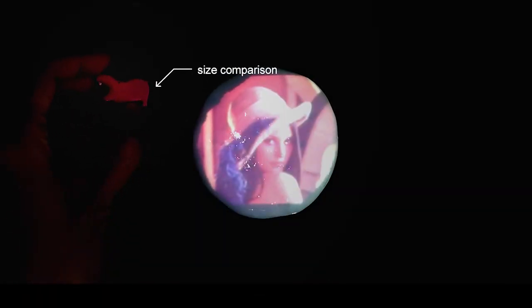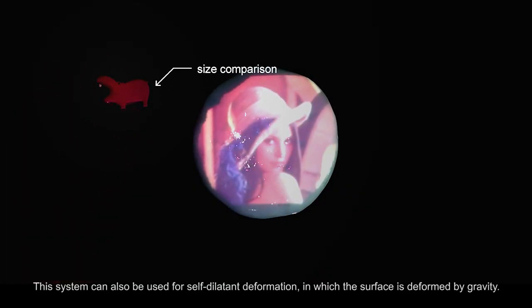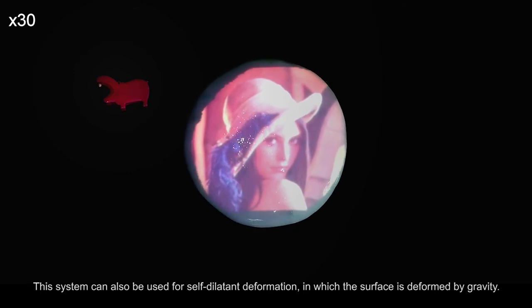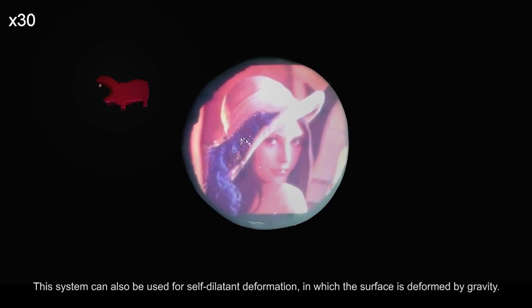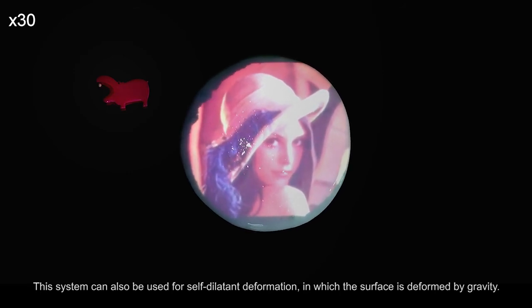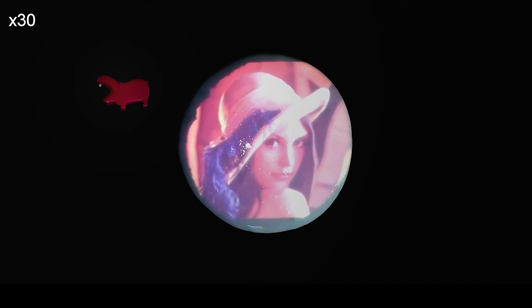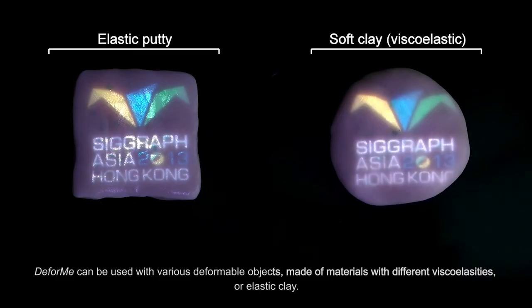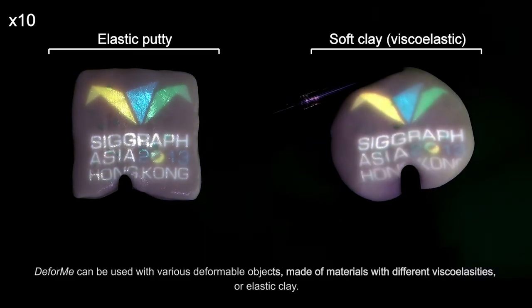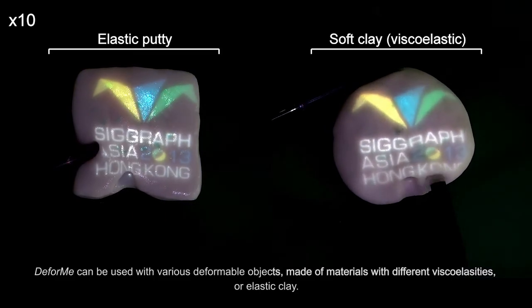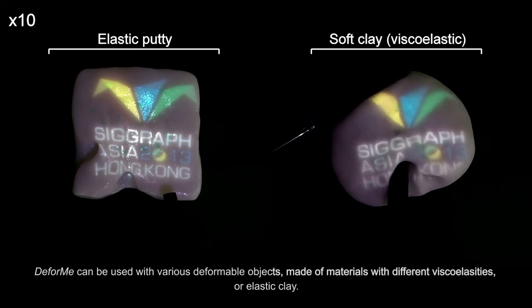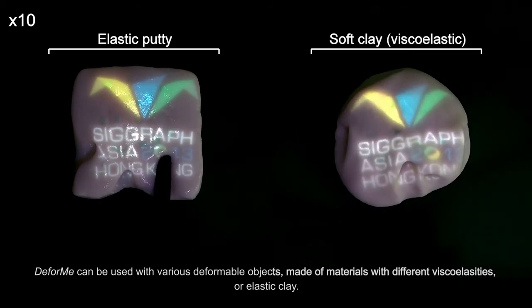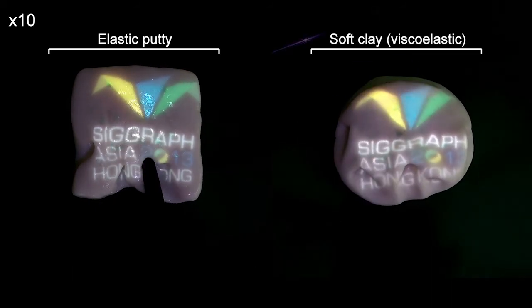This system can also be used for self-dilatant deformation, in which the surface is deformed by gravity. Deforme can be used with various deformable objects made of materials with different viscosities, or elastic clay.